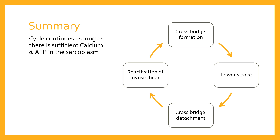The second requirement is the supply of ATP, which is required to break down and reactivate the myosin head. If there is a continued supply of ATP, the myosin heads can repeatedly detach, be hydrolyzed, and store the energy required for the power stroke. The supply of ATP is absolutely essential, and is dependent on the efficiency of the body's energy systems in resynthesizing ATP through the aerobic and anaerobic pathways — you can watch the energy system videos for more detail. In summary: cross bridge formation, power stroke, cross bridge detachment, reactivation of the myosin head — the cycle continues provided there are sufficient calcium ions and ATP in the sarcoplasm.